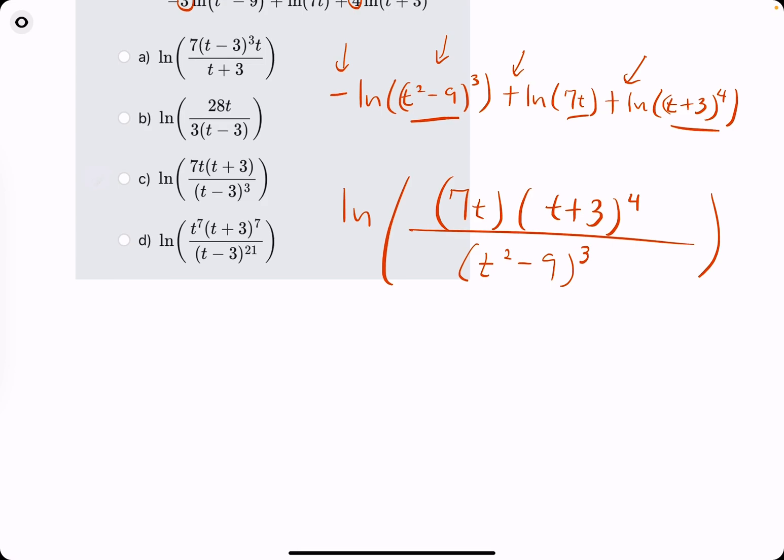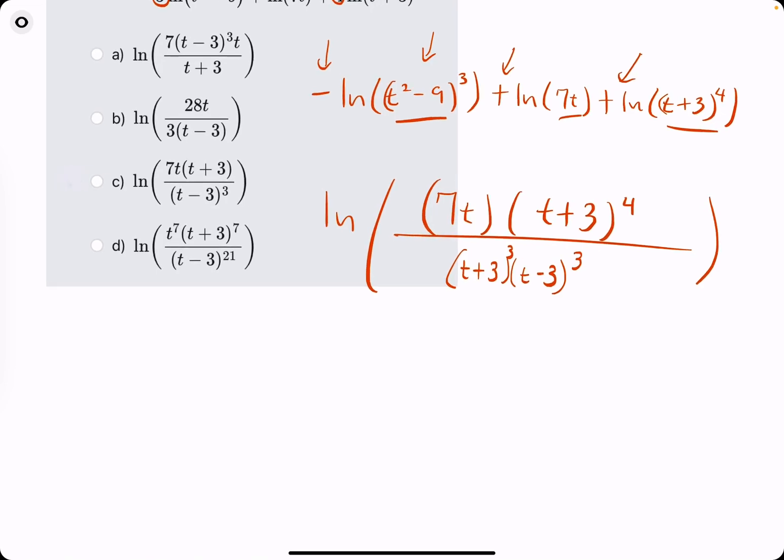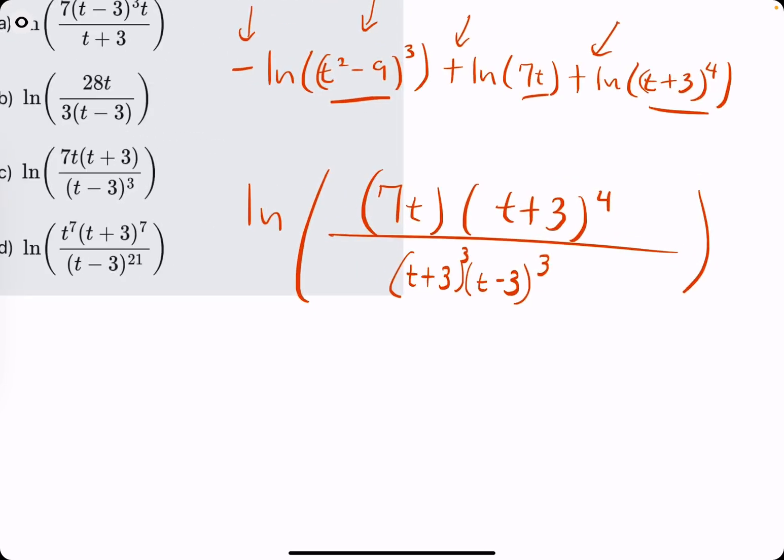So we now factor the denominator. t² - 9 is equivalent to (t + 3)(t - 3). And since there was a 3 exponent originally, then both these exponents, both these factors should get that.